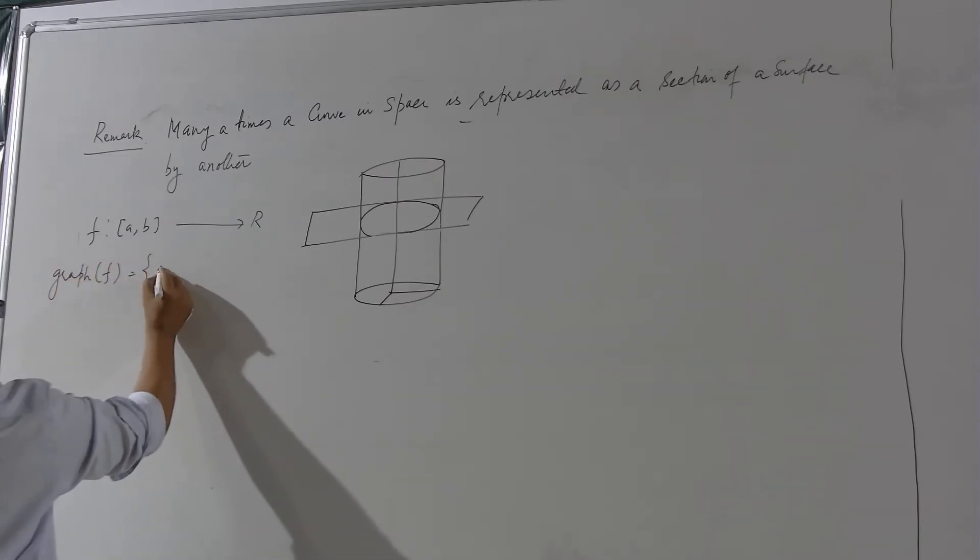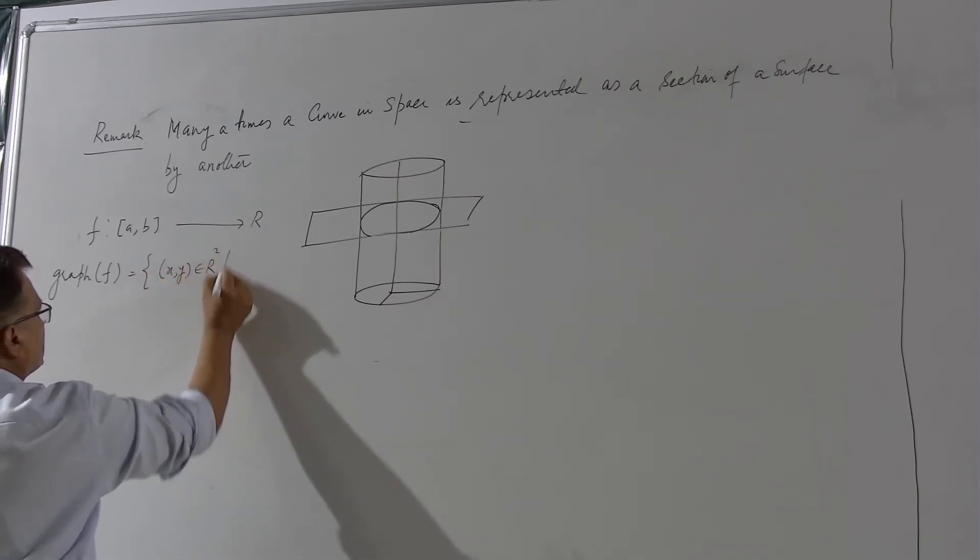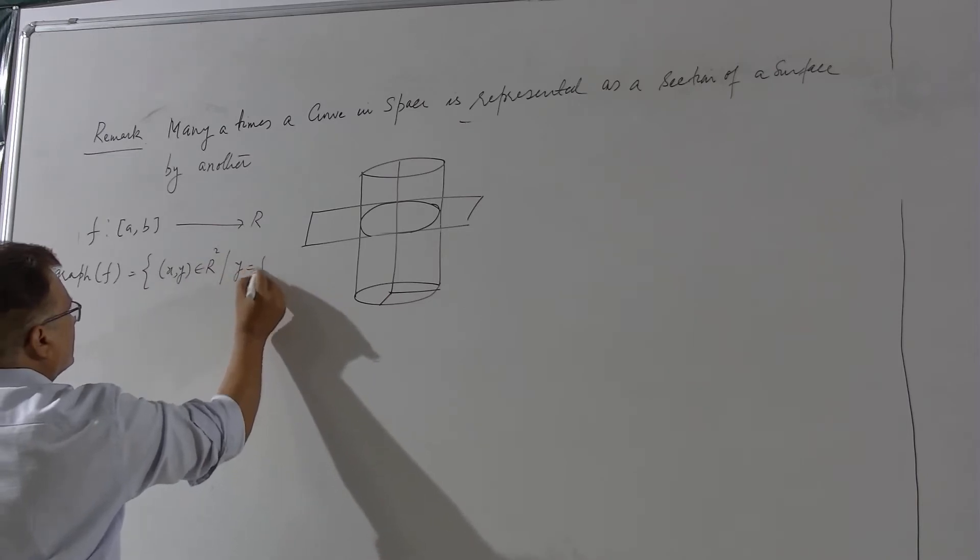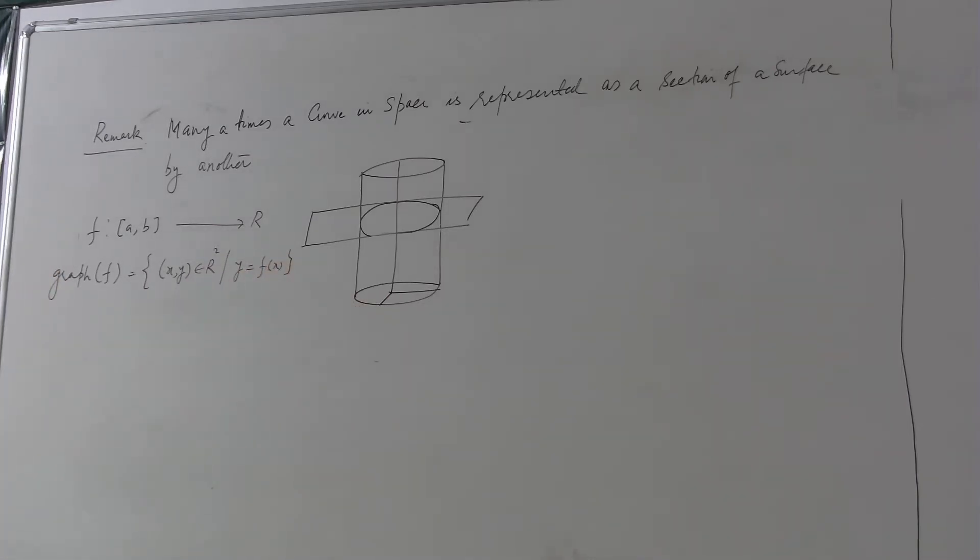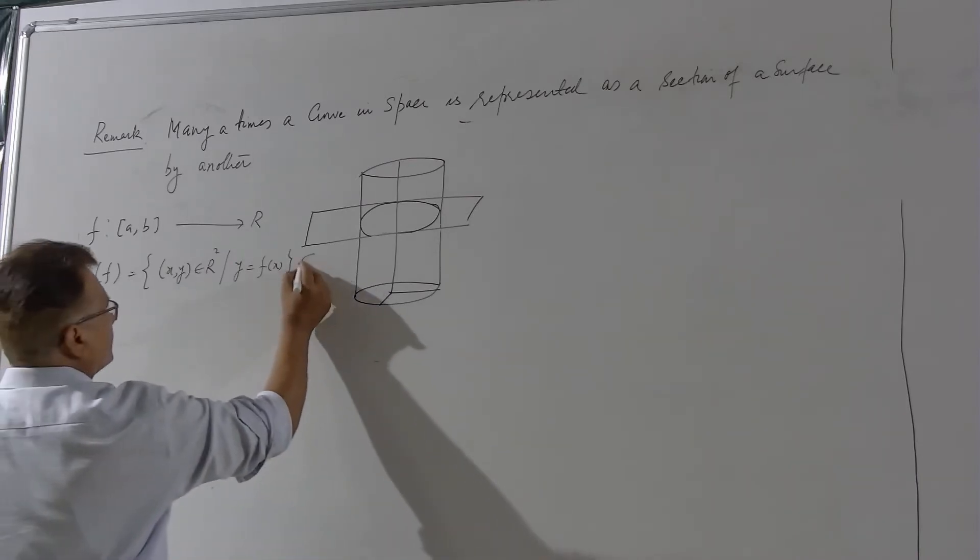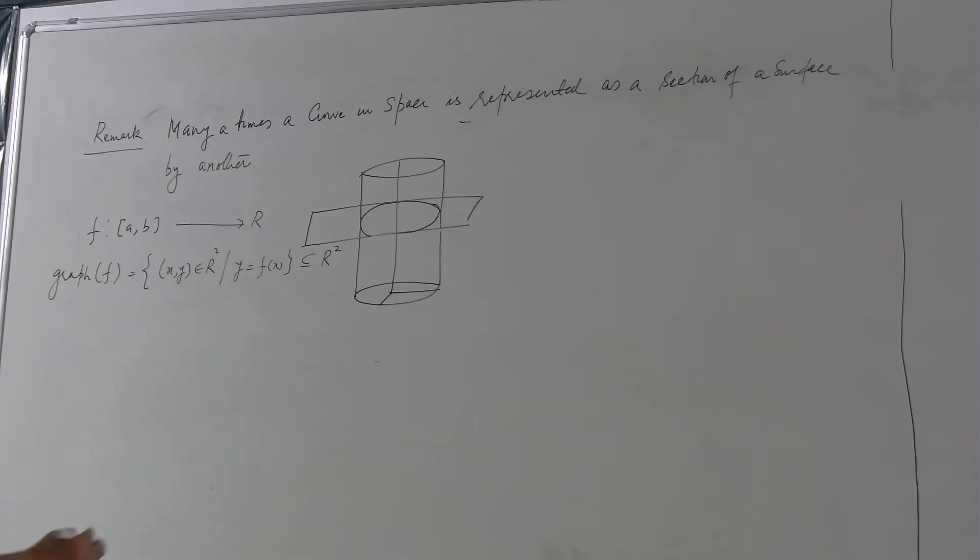Graph of f is the set of all those points (x,y) in R² such that y equal to f of x. Now this is a subset of R² and you say that it is the graph of f in R².